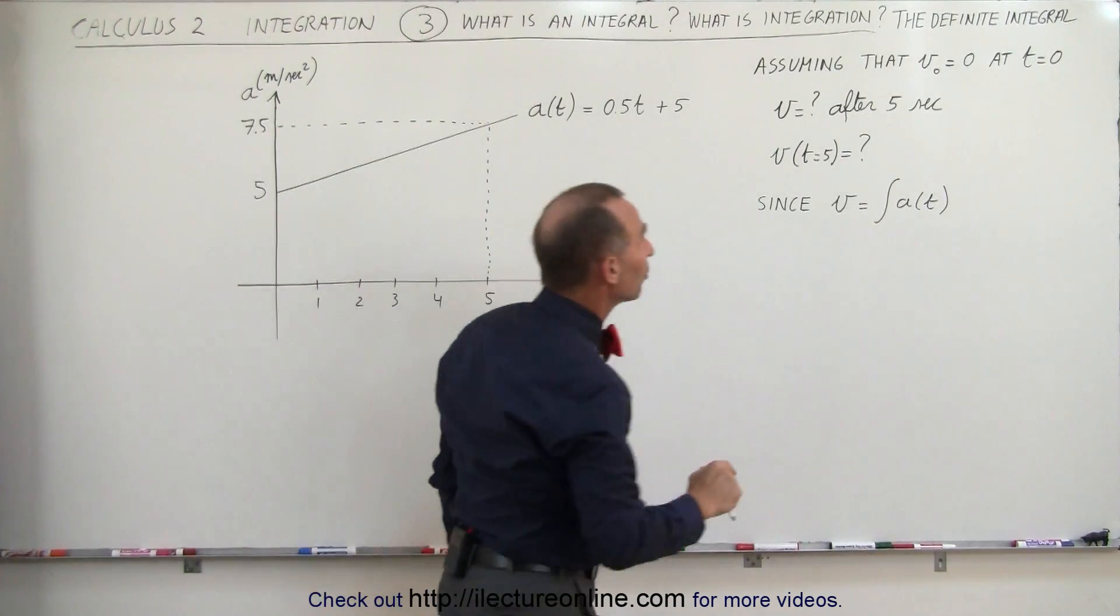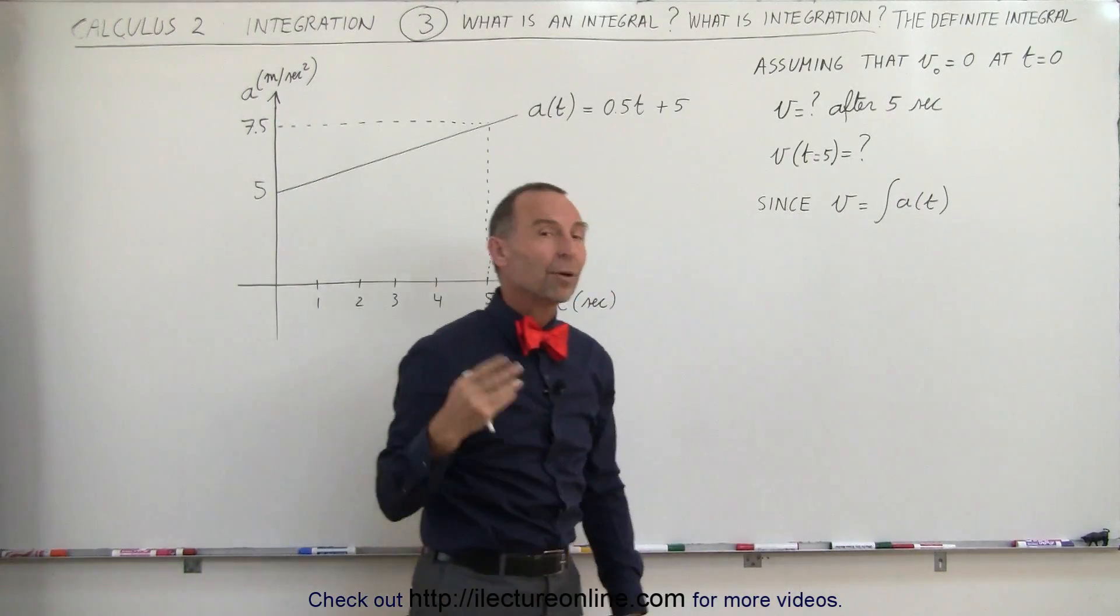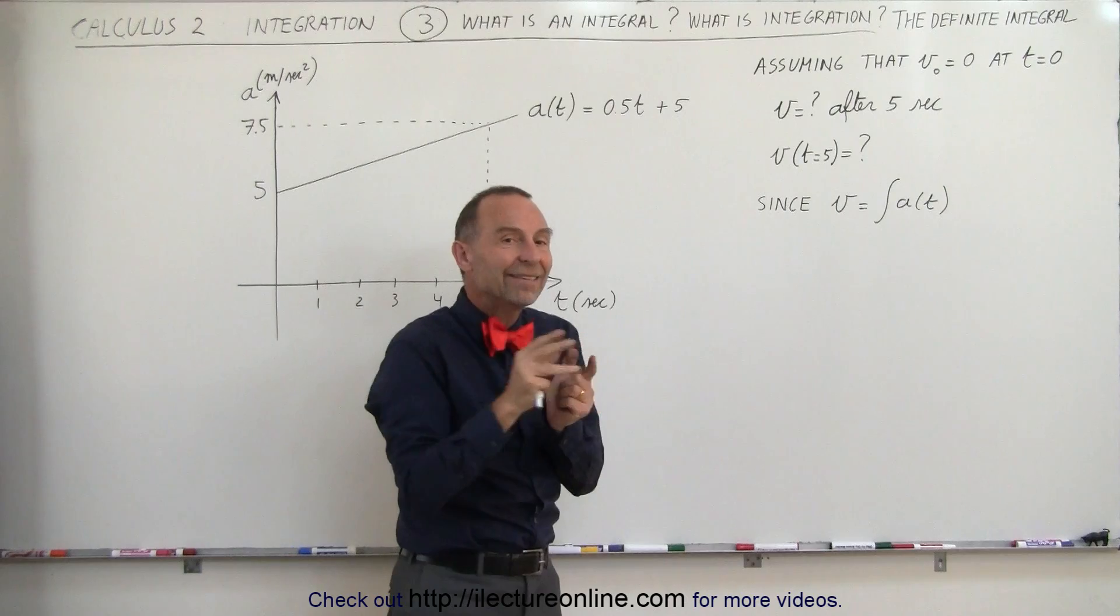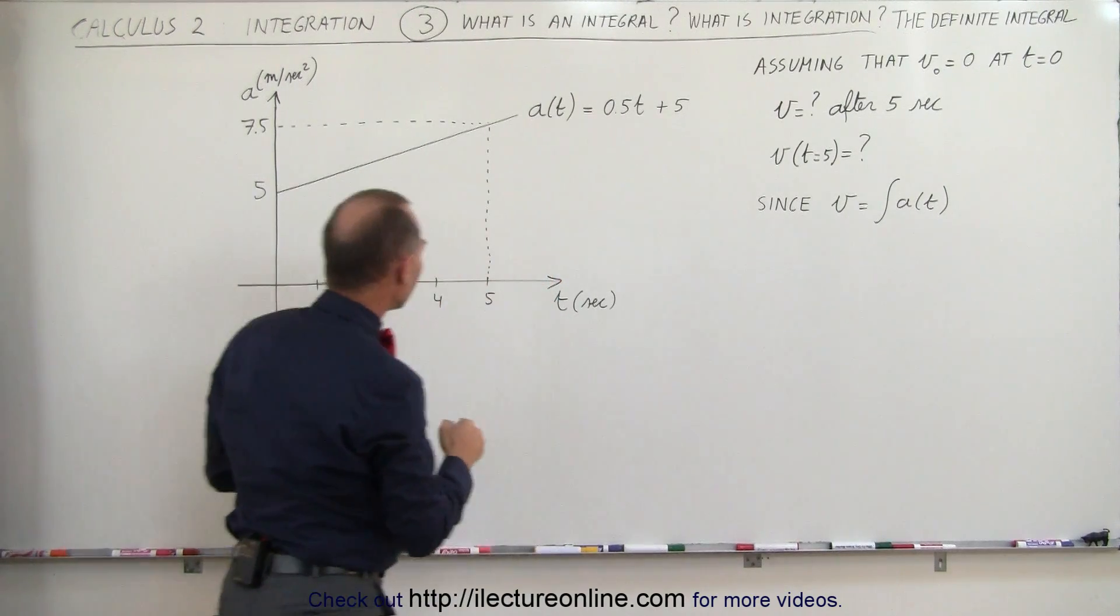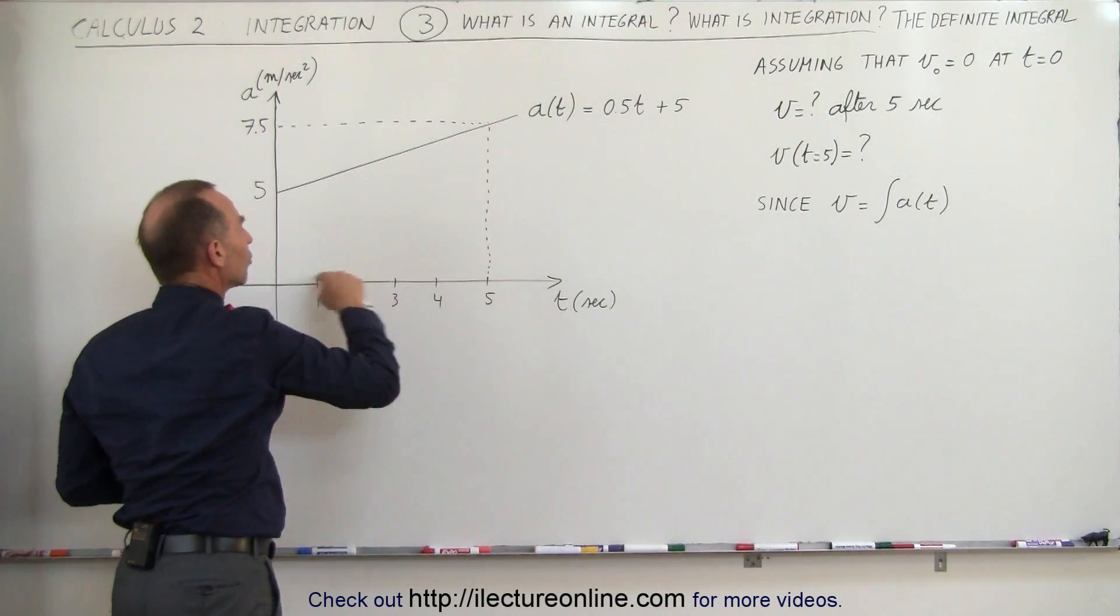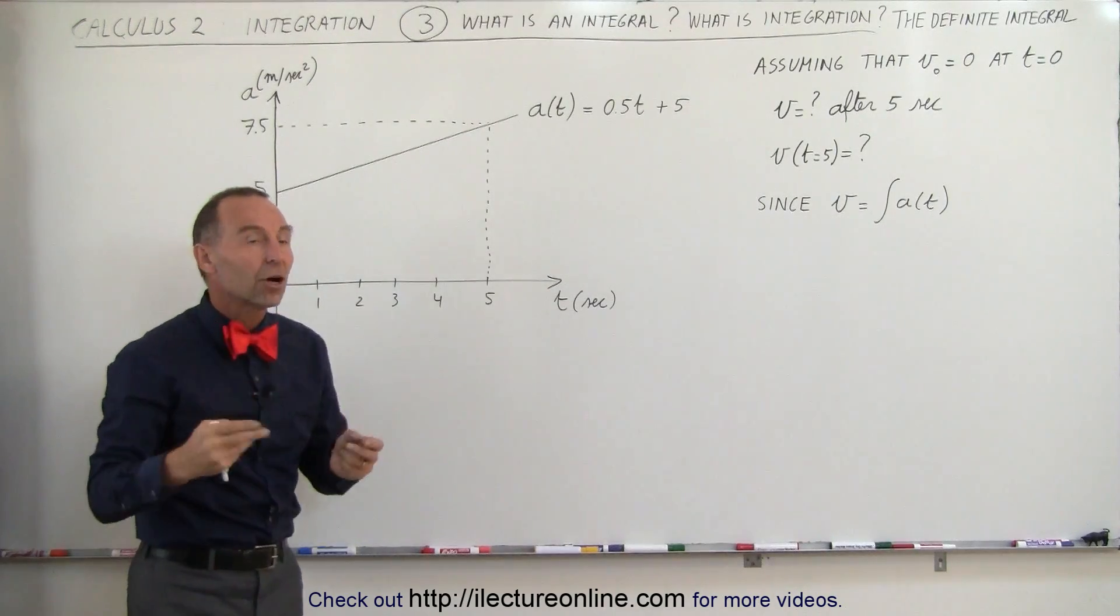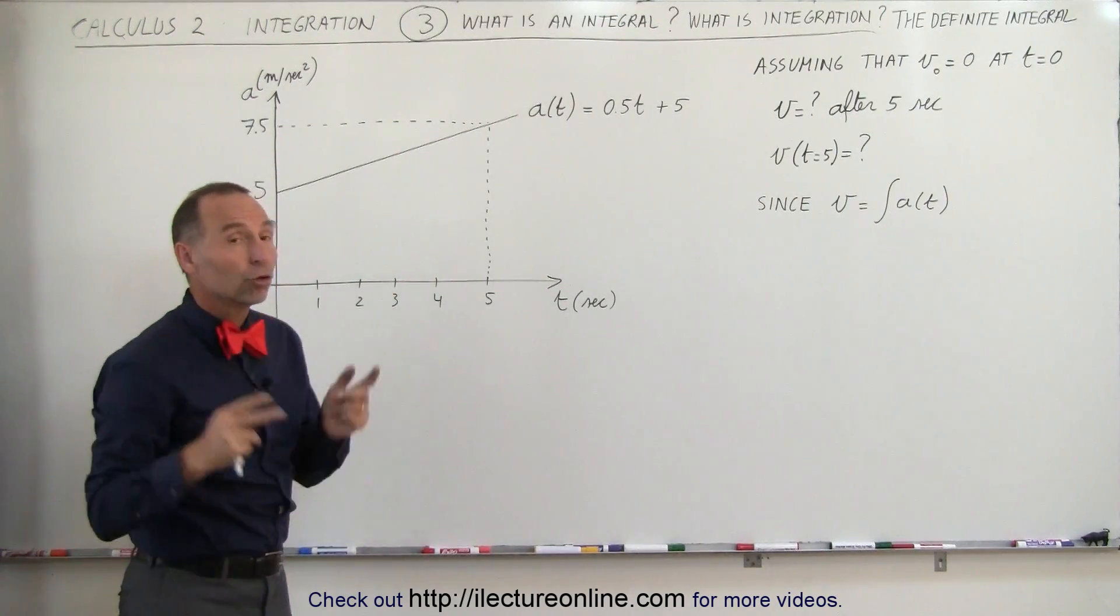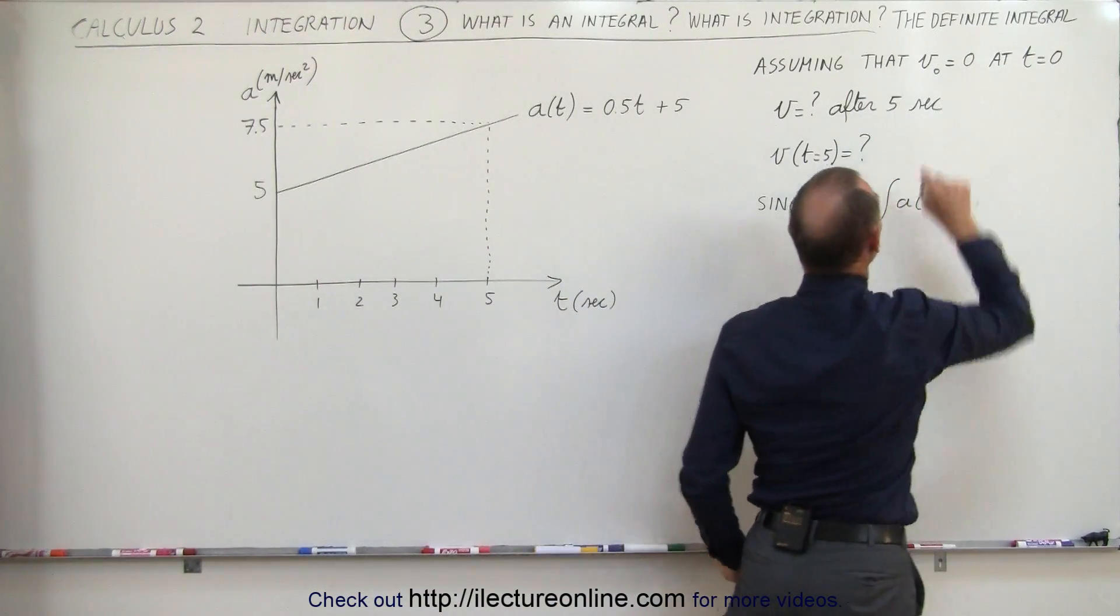Now, what we can do here is we can find what the velocity would be after a certain amount of time by realizing that the velocity is the integral of the acceleration. Another way of looking at it, the integral of the acceleration will be the area underneath this graph. So this area right here represents the velocity of the car as time goes by. Assuming that when time is equal to zero, the initial velocity was equal to zero.